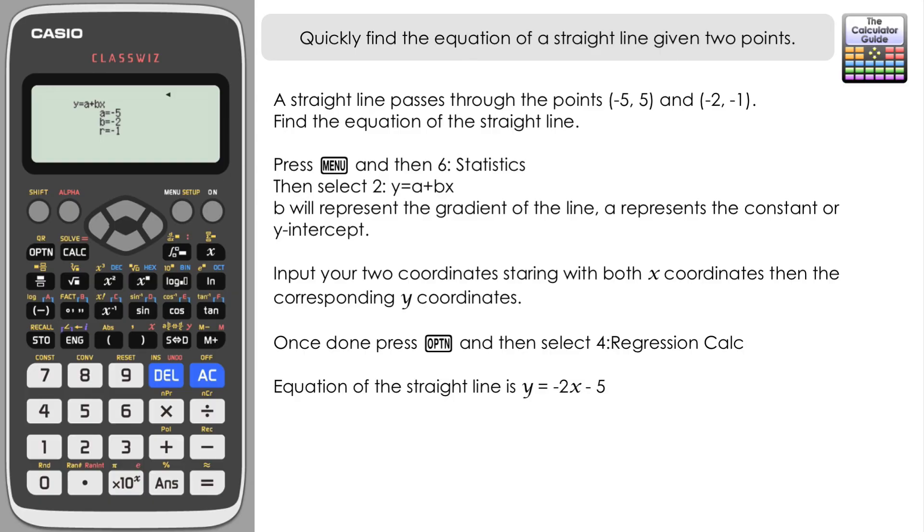And once again the r there showing -1. We've got perfect negative correlation between the two points. Of course we have, because we've essentially got a straight line joining the two there with a negative gradient.